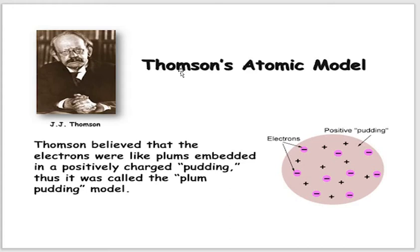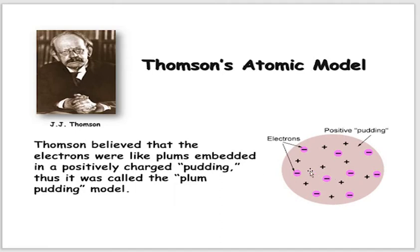First, we are discussing Thomson's Atomic Model. Thomson's Atomic Model was proposed by J.J. Thomson in 1898. In this atom model, the atom consists of positively charged matter in which electrons are embedded as plums in pudding. That is why this atom model is called the plum pudding model.